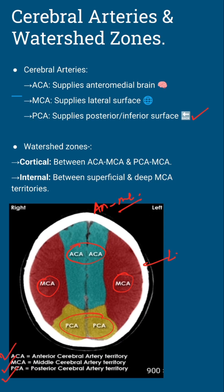Now the watershed zones — these are the danger spots between arteries. You have cortical zones between ACA-MCA and PCA-MCA, plus internal zones between superficial and deep MCA territories. These are prime targets for strokes. Memorize them for USMLE Step 1.